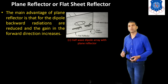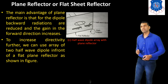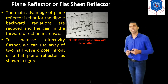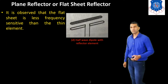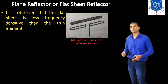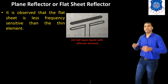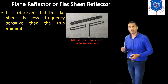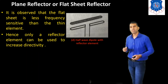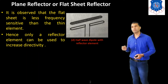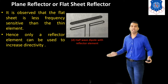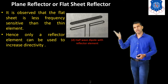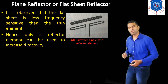So we can increase the gain in the forward direction. To increase the directivity further, we can use an array of two half-wave dipoles in front of the flat plane reflector as shown in the figure. It is observed that the flat sheet is much less frequency sensitive than the thin element, so a simple thin element can be used as a reflector to increase the directivity of the antenna.